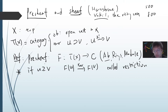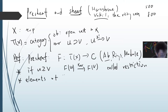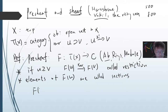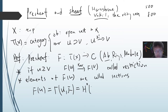The pre-sheaf is very general. Some language: the elements of F(U) are called sections. Also, F(U) is sometimes written as Γ(U, F). This is related to sheaf cohomology — you can define H⁰(U, F) as the zero cohomology, and F(X) is called the global section.